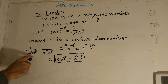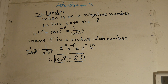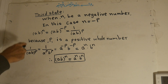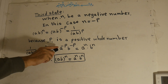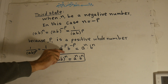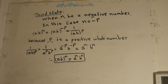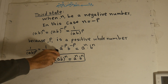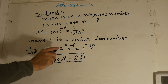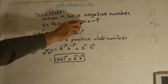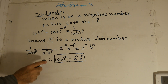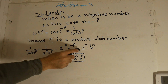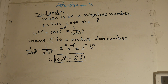Since p is a positive whole number, one over ab to the power of p equals one over a to the power of p times b to the power of p. Now we change back to the negative state by reversing: a to the power of negative p times b to the power of negative p. Since negative p equals n, that is a to the power of n times b to the power of n. Therefore ab to the power of n equals a to the power of n times b to the power of n.